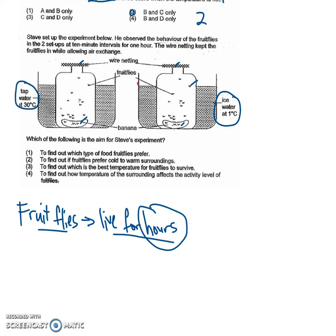The key difference or the key variation or the number one variation in this experiment is the temperature. This one is 30 degrees Celsius, this one is one degree Celsius.